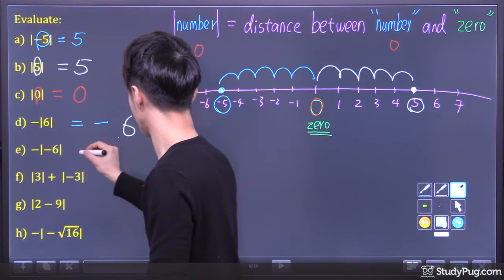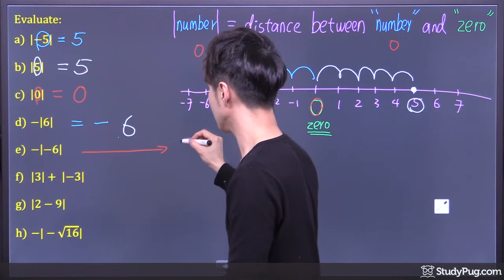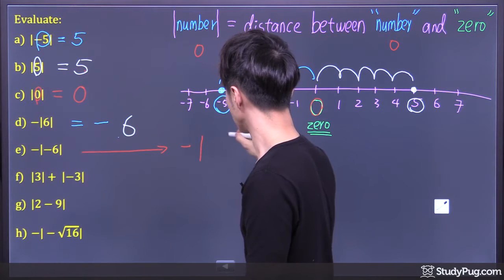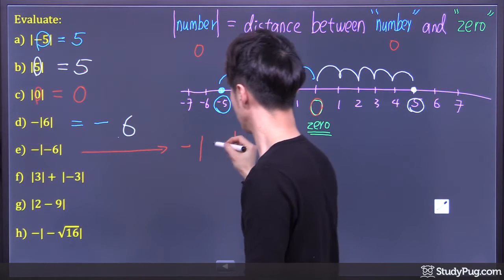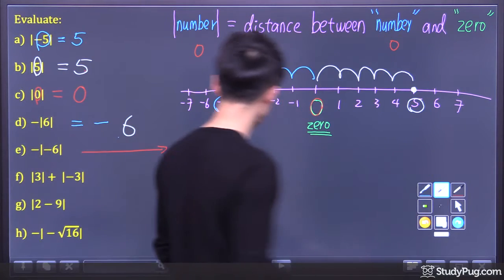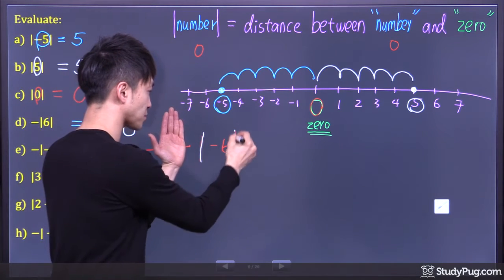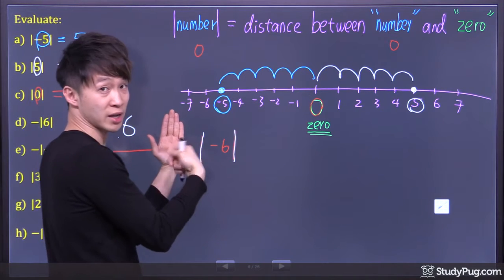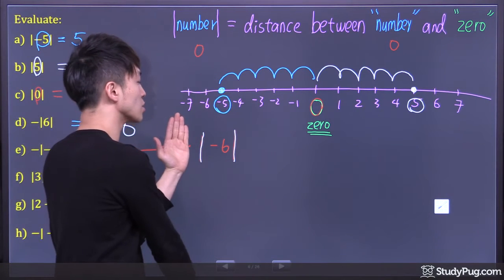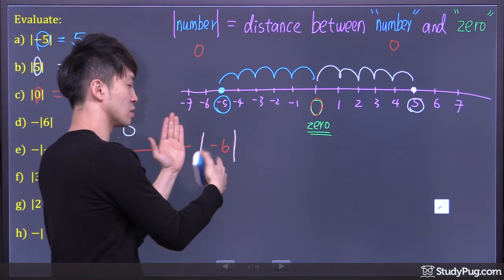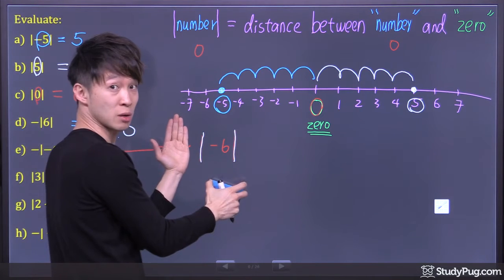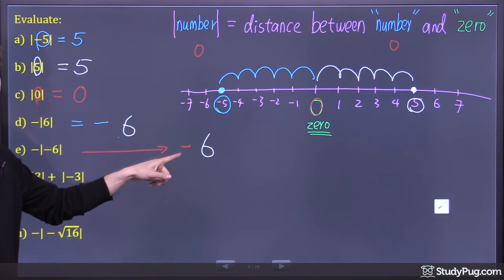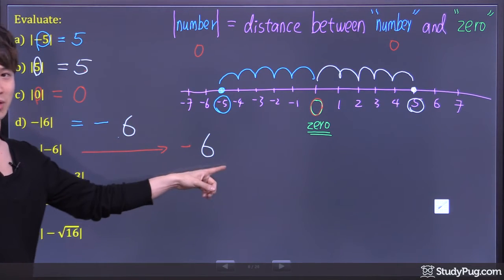Question E: we have negative absolute value of negative 6. Just focus on the absolute value first. What's the absolute value of a negative number? We're going to get a positive answer. So absolute value of negative 6 is positive 6. Now, in front of it we have a negative sign. So the final answer is negative 6.